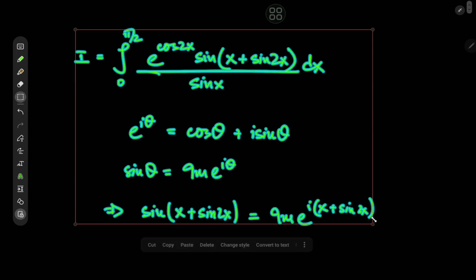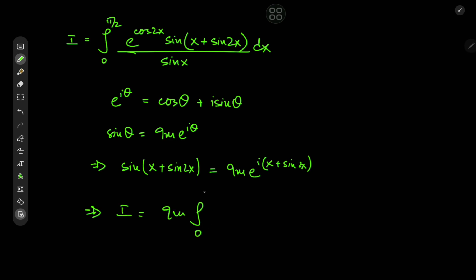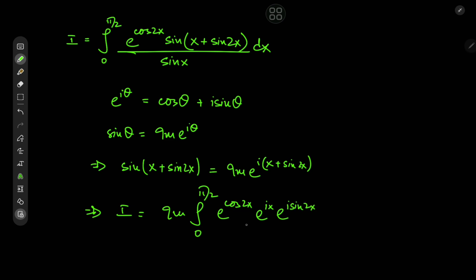What does that mean for our target integral? This implies that I is now the imaginary part of the integral from 0 to π/2 of e to the cosine 2x times e to the i(x + sine 2x), which I expand as e to the (ix + i·sine 2x). We can expand this further using exponential multiplication, giving us e to the ix times e to the (i·sine 2x), all divided by sine x, integrated with respect to x.